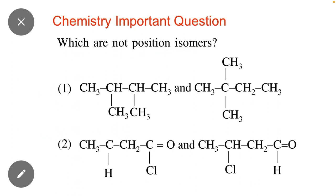In position isomers the position of function group is changed. For example here you can see that methyl group changed its position from this carbon to this carbon. In position isomers just function group changed its position.